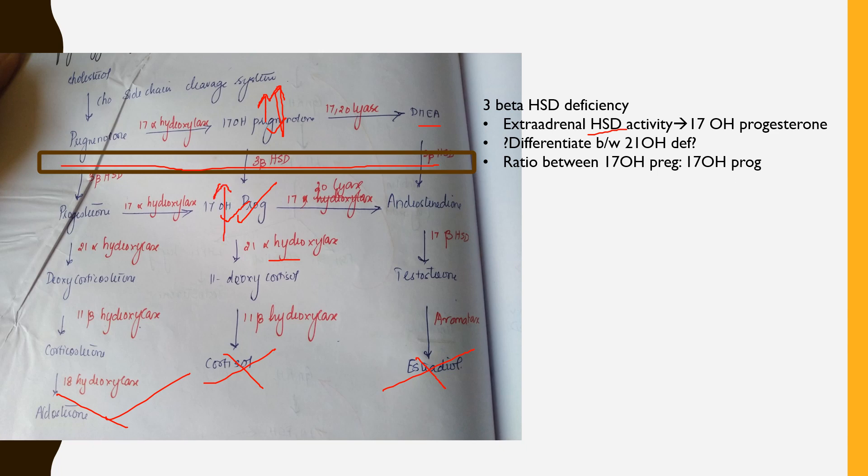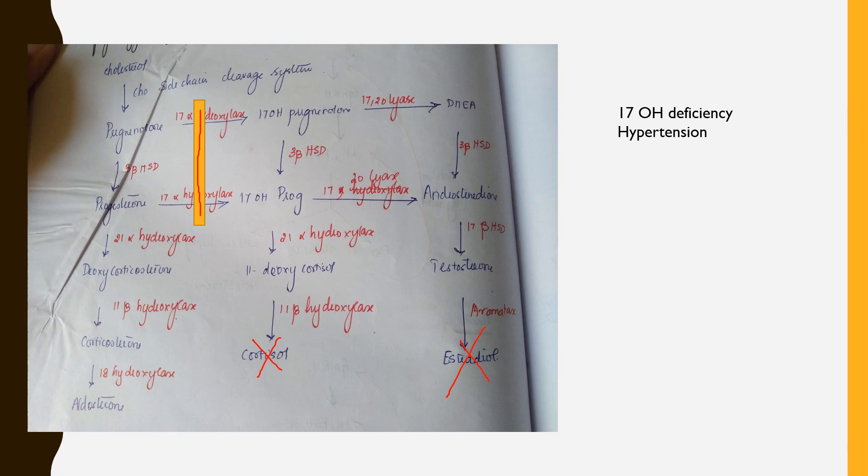For 17-alpha hydroxylase deficiency: there is a vertical block, so cortisol is not formed, sex hormones are not formed, and a male can present with female-like genitalia or incomplete virilization. Aldosterone will be very much increased, so the child can present with hypertension.